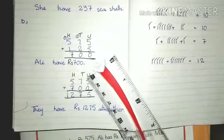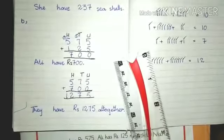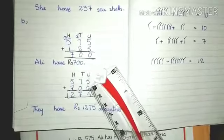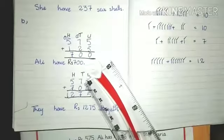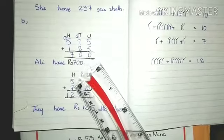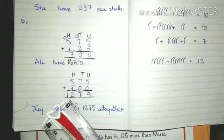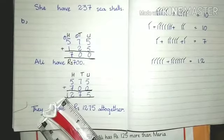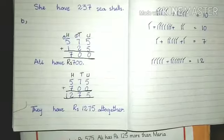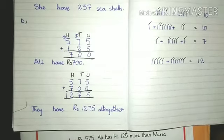We will write and we will start from unit side. In 5 we will add 0, answer will be 5. In 7 we will add 0, answer will be 7. In 7 we will add 5, answer will be 12. Means our answer is 1275. It means in dono ke paas total milakar paise 1275 rupay hain.